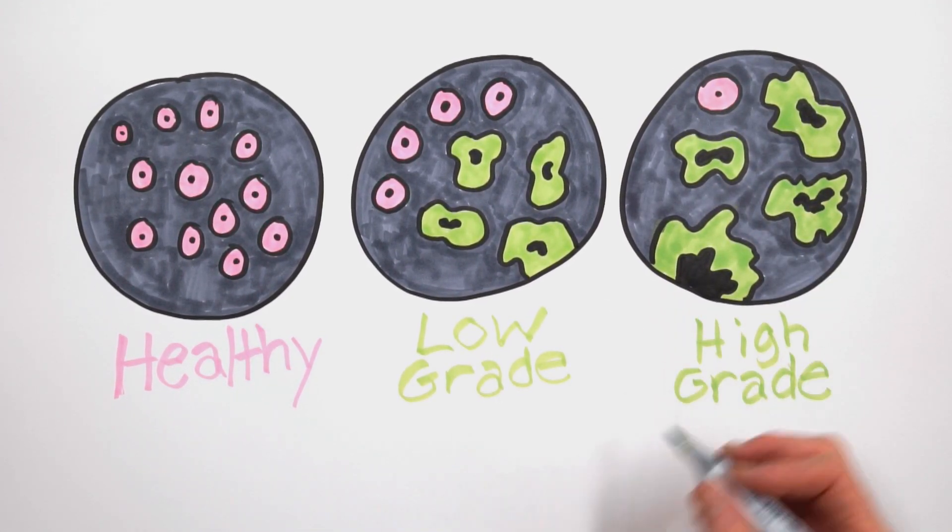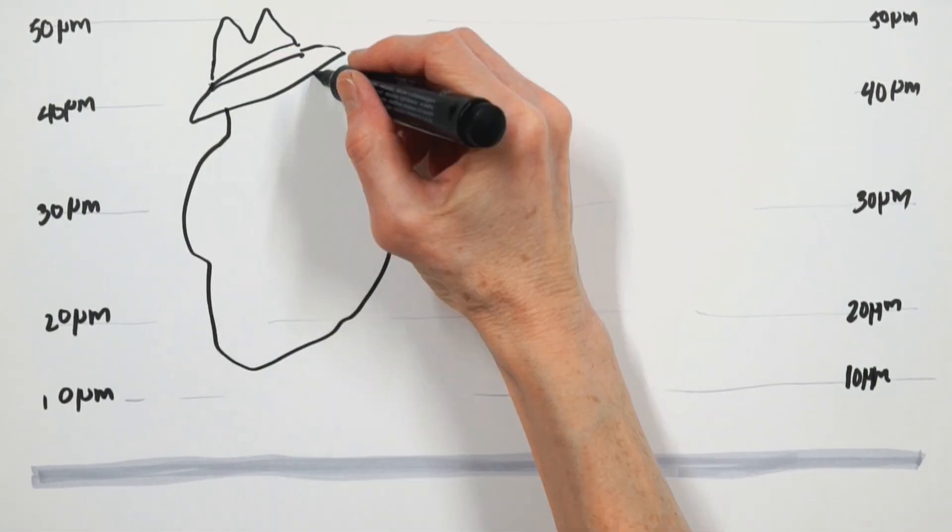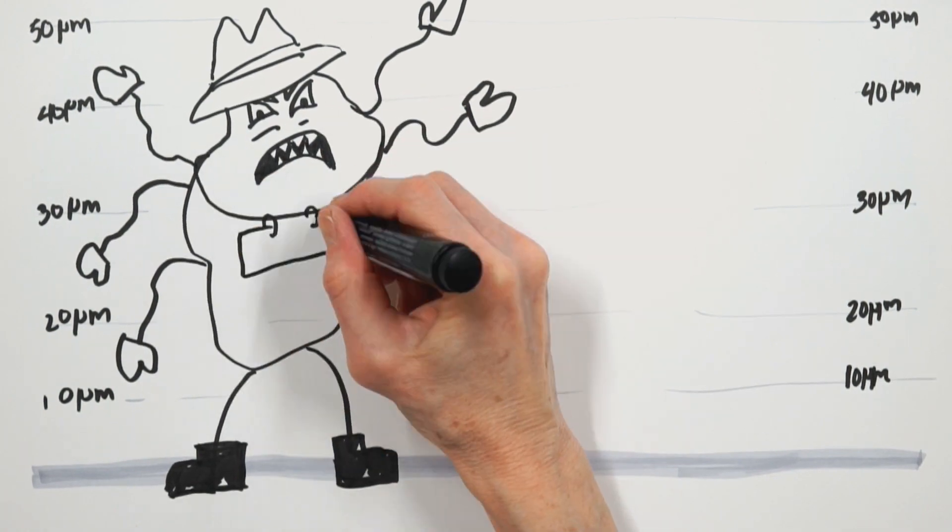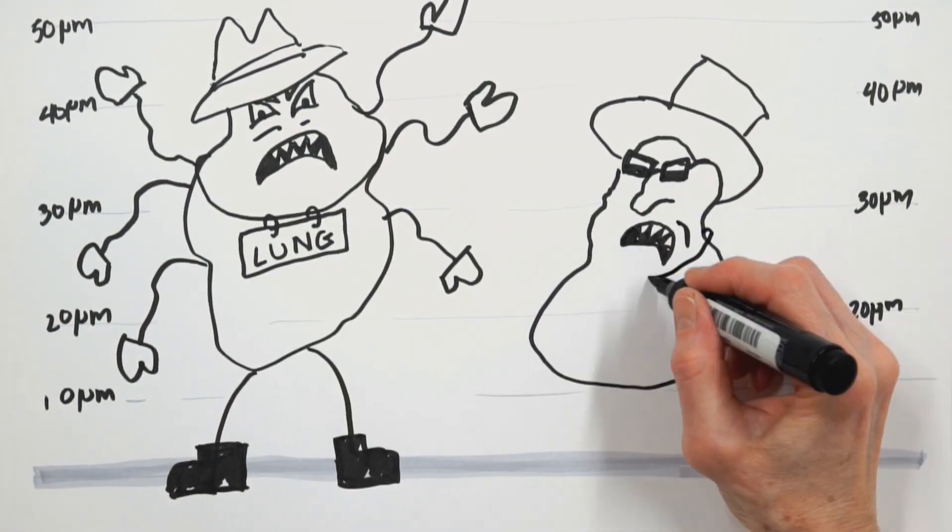For high-grade tumors, we can't be certain that these cells are coming from the lung. The cancer may have metastasized or spread from another site. Because we have multiple suspects, we need to identify the correct cancer type.